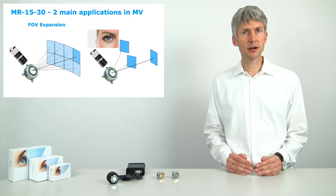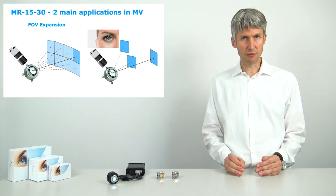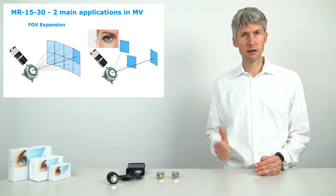On the left, the principle of field of view expansion is shown. The 2D mirror placed in proximity of the camera allows to select the angle the camera is looking at. This allows then to stitch images together.